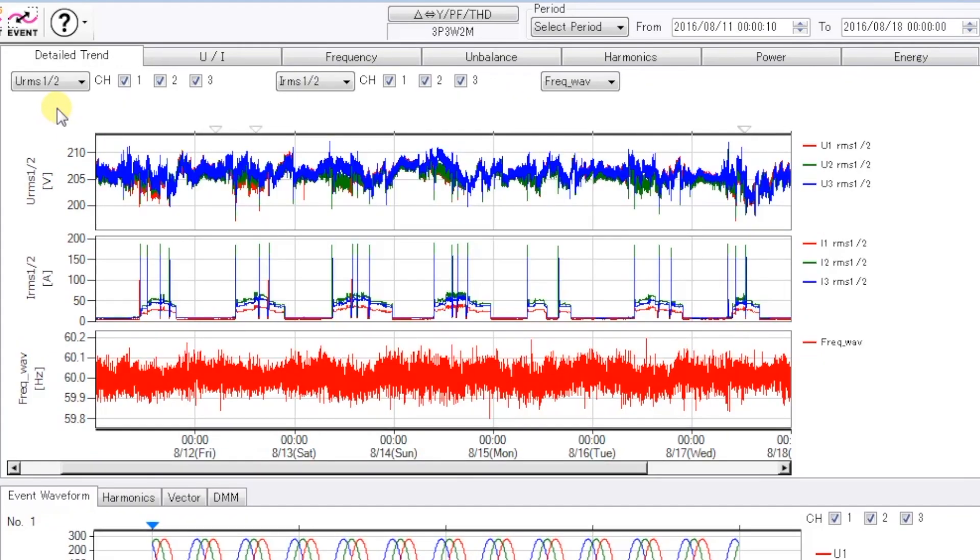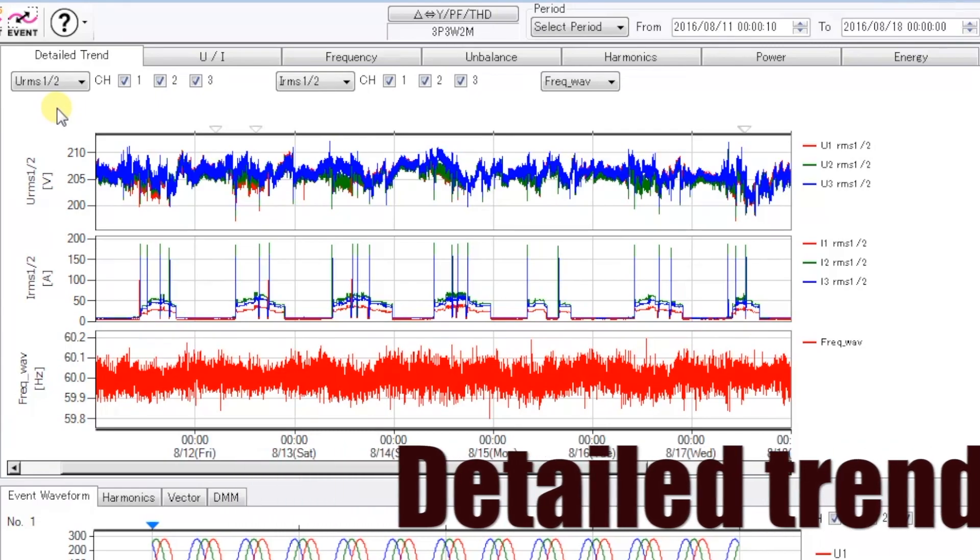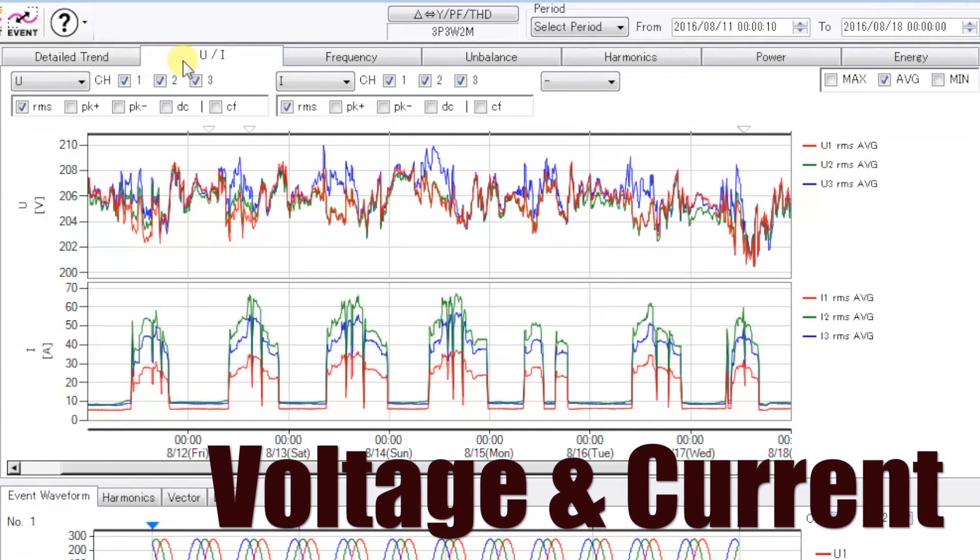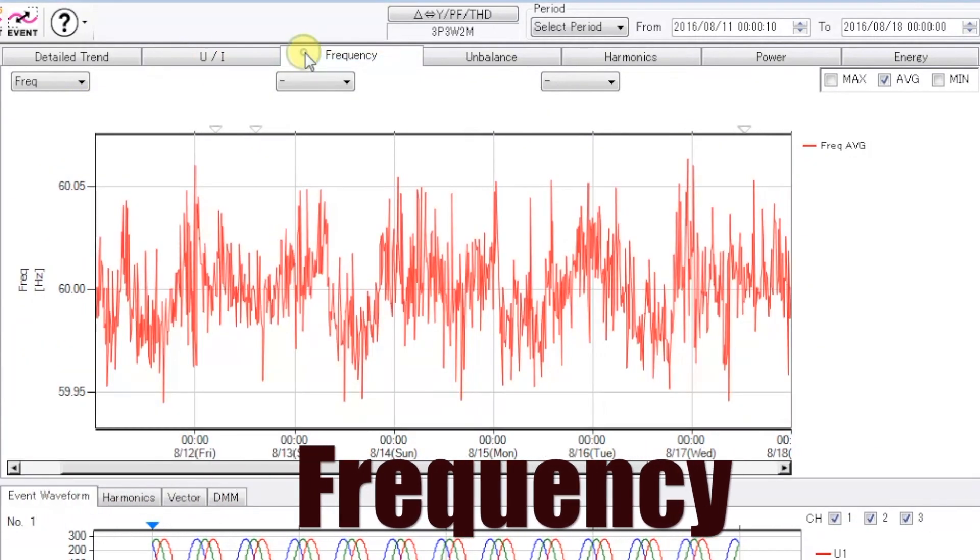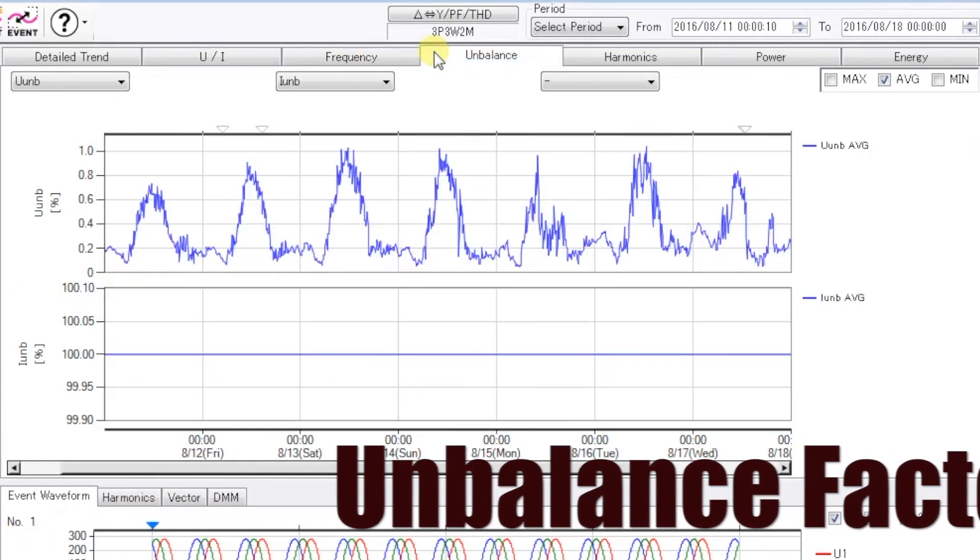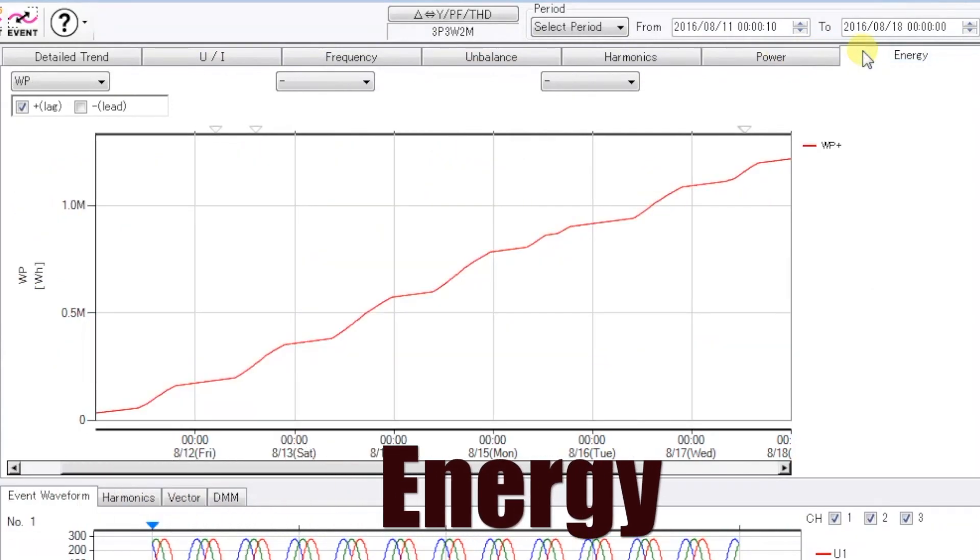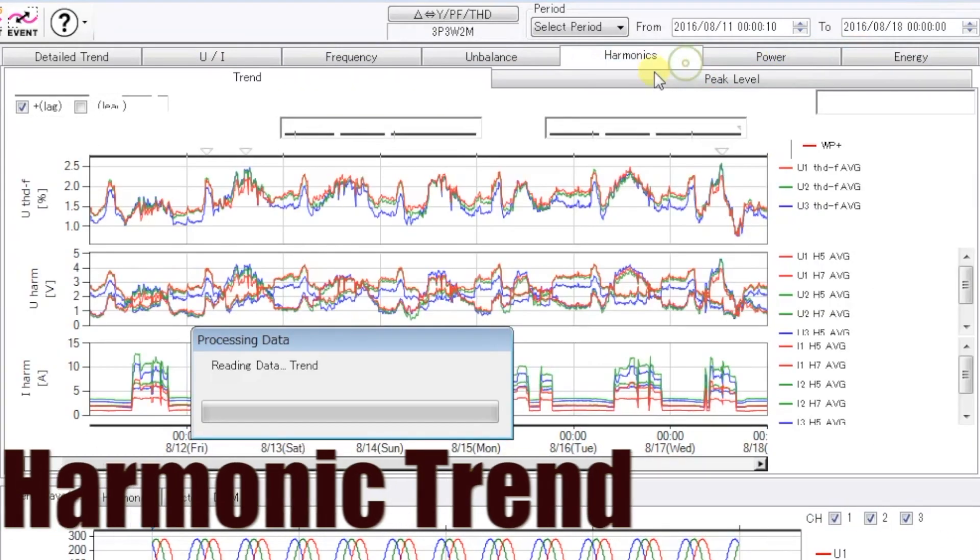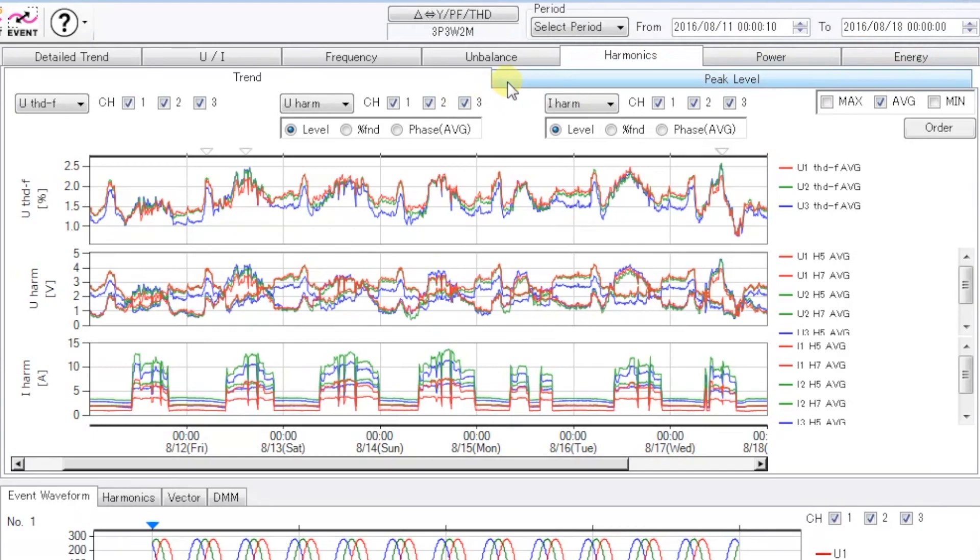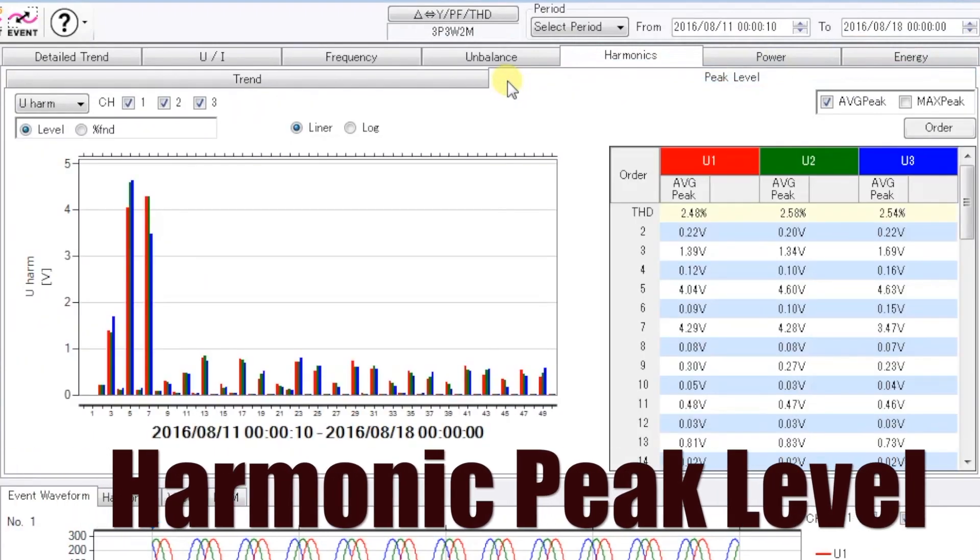Click the tabs to see detailed full or half-wave trends. Easily check for voltage and current, frequency, unbalanced factor, power, energy, harmonic trend, and harmonic peak levels.